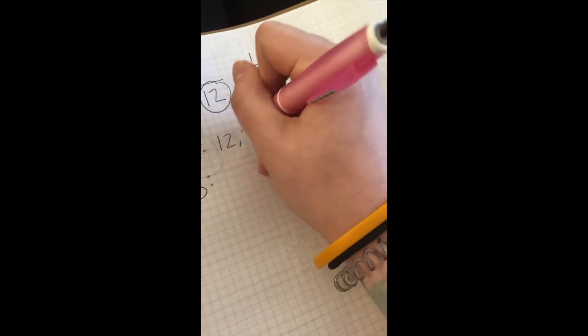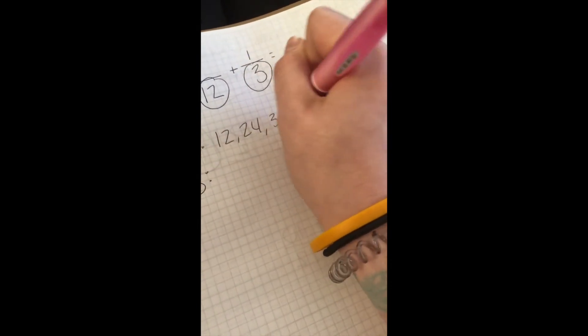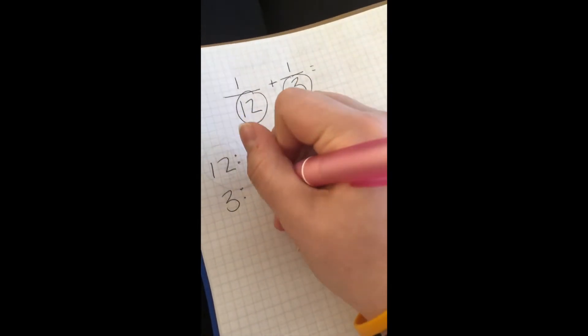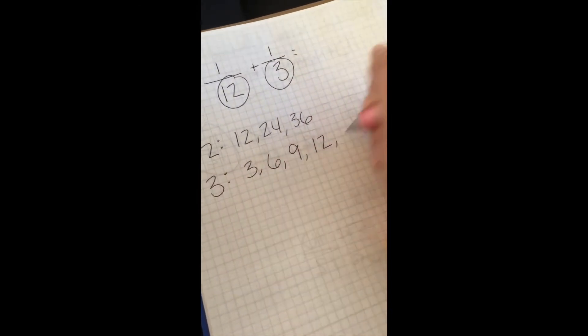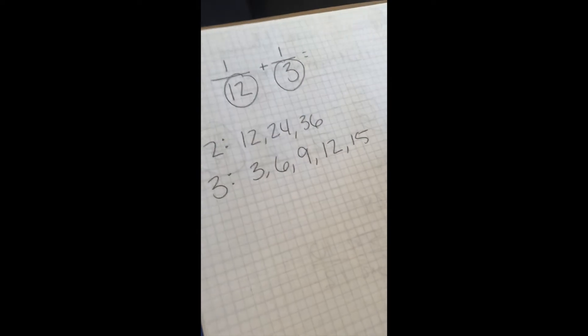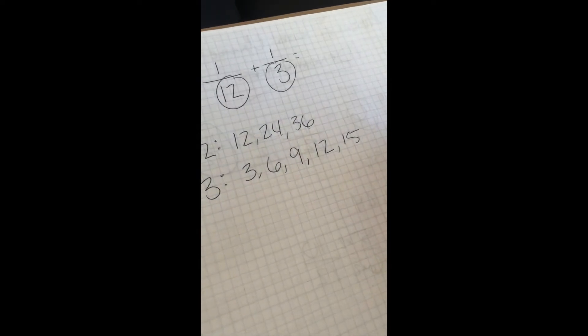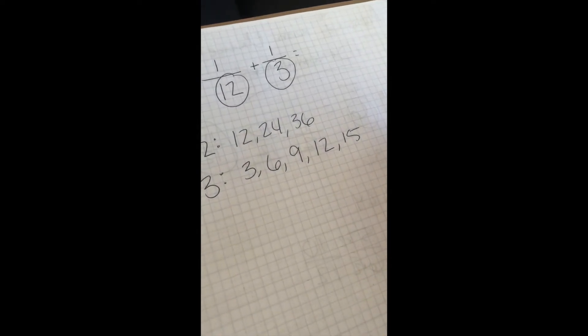12, 24, 36, same thing with 3: 3, 6, 9, 12, 15. The one that they have that's the same, that's the smallest, would be 12.